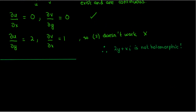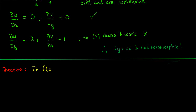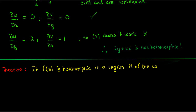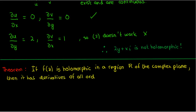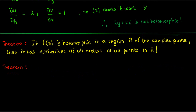There are a couple more theorems before I end this video. One of these is a really powerful one: if a complex function is holomorphic or differentiable in a region R on the complex plane, then that function is infinitely differentiable in the region R. So if the first derivative of the complex function exists and is continuous, it follows that derivatives of all orders exist and are continuous. That's really powerful.